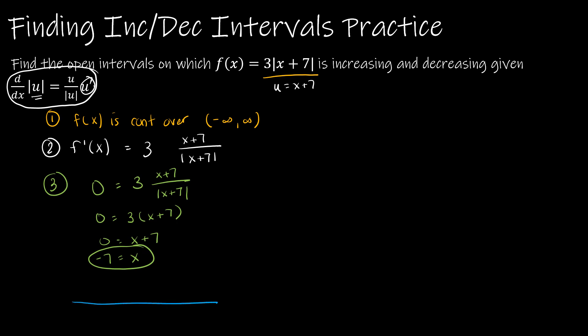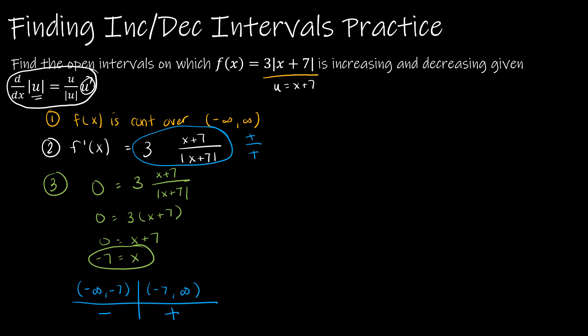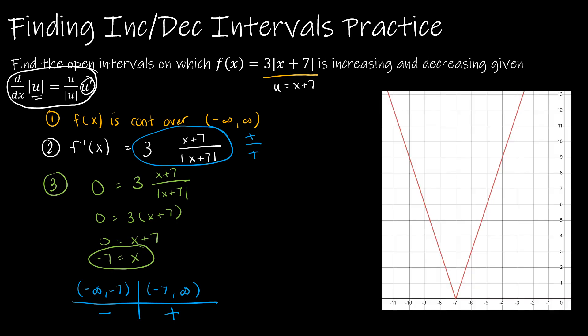With one critical value, the intervals are negative infinity to negative 7, and negative 7 to infinity. Test x equals negative 8: the numerator is negative 8 plus 7 equals negative 1 (negative), the denominator's absolute value is positive, so the result is negative — decreasing. Test x equals 0: numerator is 7 (positive), denominator is 7 (positive), result is positive — increasing. So the function is decreasing to negative 7 and increasing after that. The graph confirms this.